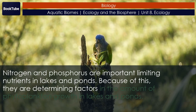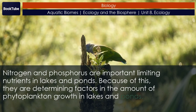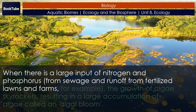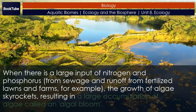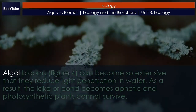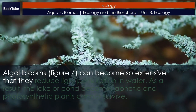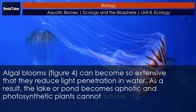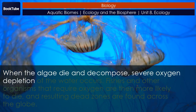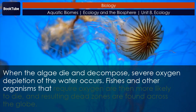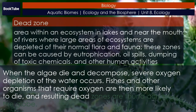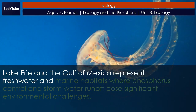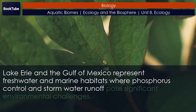Nitrogen and phosphorus are important limiting nutrients in lakes and ponds and are determining factors in the amount of phytoplankton growth. When there is a large input of nitrogen and phosphorus — from sewage and runoff from fertilized lawns and farms, for example — the growth of algae skyrockets, resulting in a large accumulation of algae called an algal bloom. Algal blooms can become so extensive that they reduce light penetration in water; as a result the lake or pond becomes aphotic and photosynthetic plants cannot survive. When the algae die and decompose, severe oxygen depletion of the water occurs, and fishes and other organisms that require oxygen are then more likely to die, resulting in dead zones found across the globe. Lake Erie and the Gulf of Mexico represent fresh water and marine habitats where phosphorus control and storm water runoff pose significant environmental challenges.